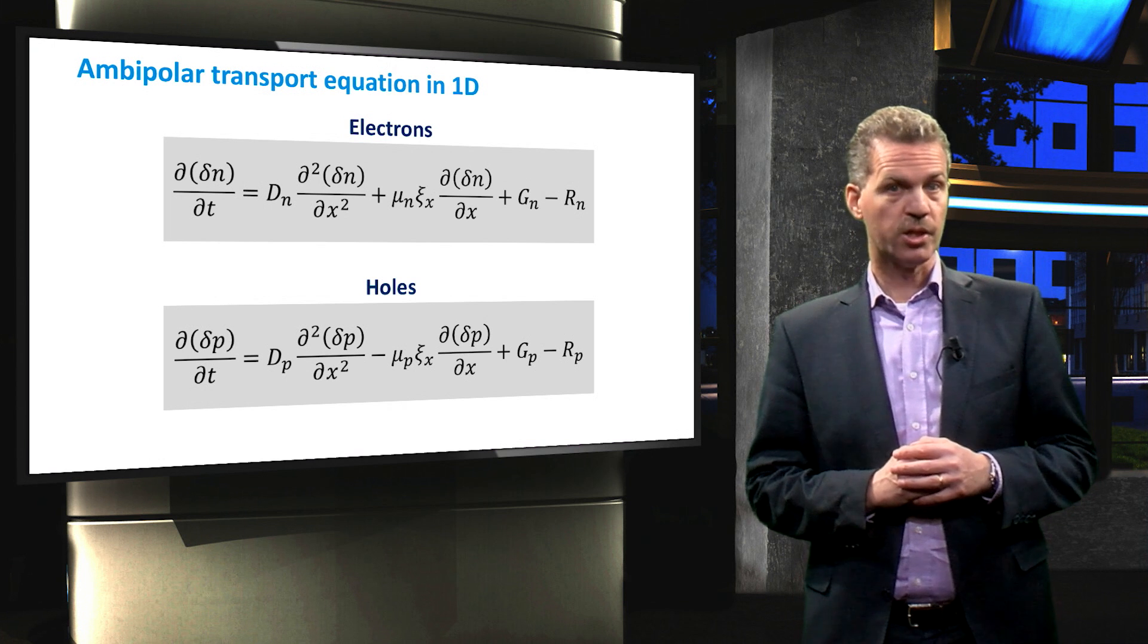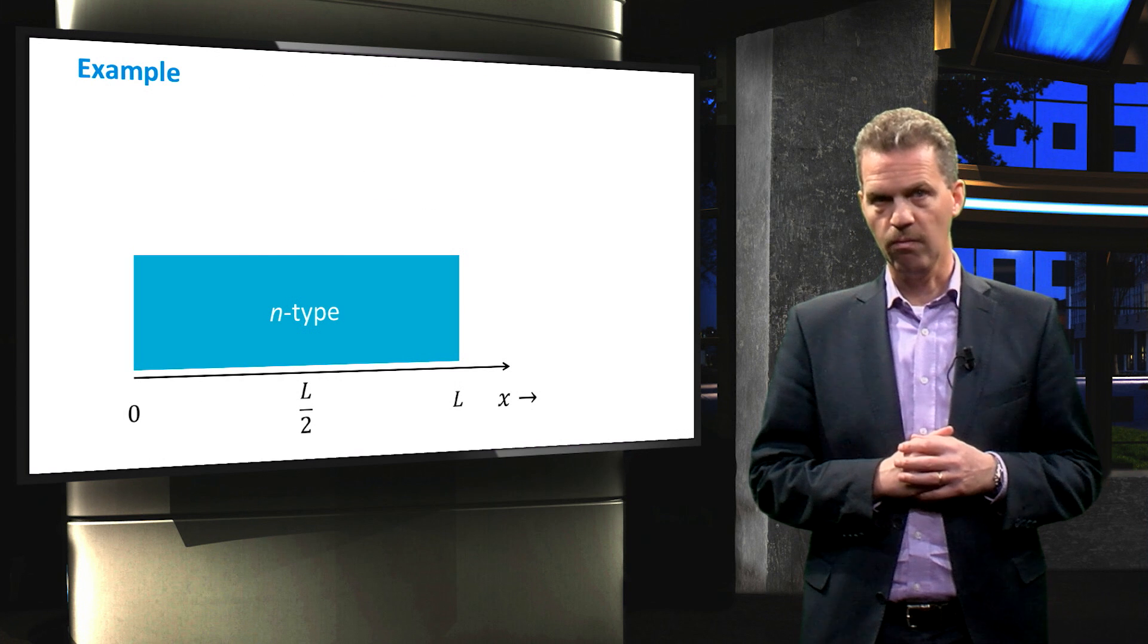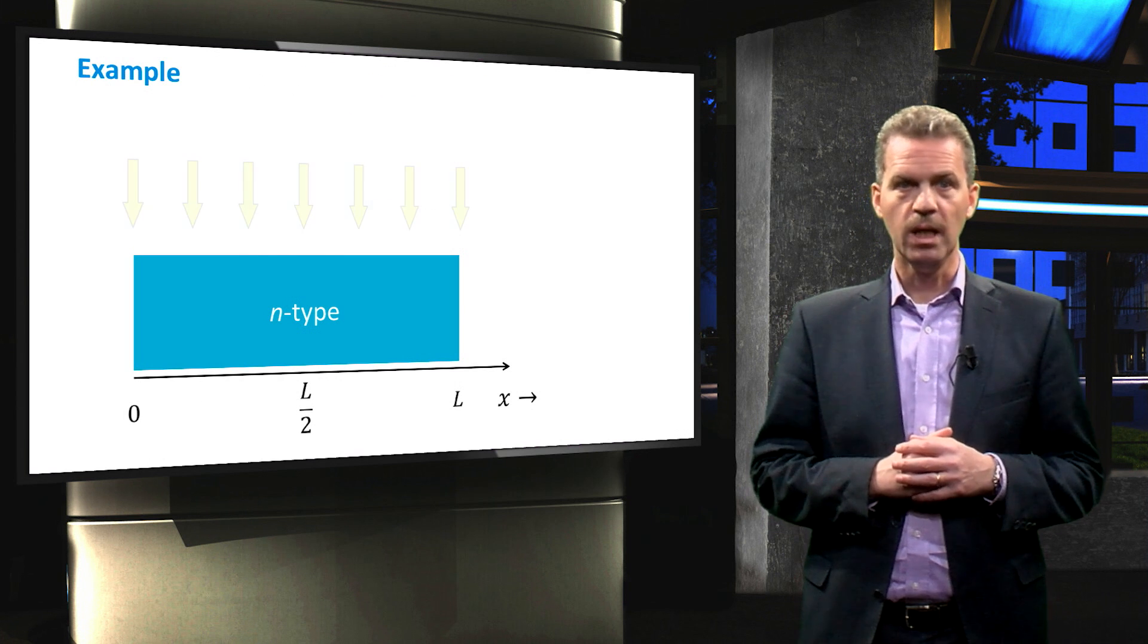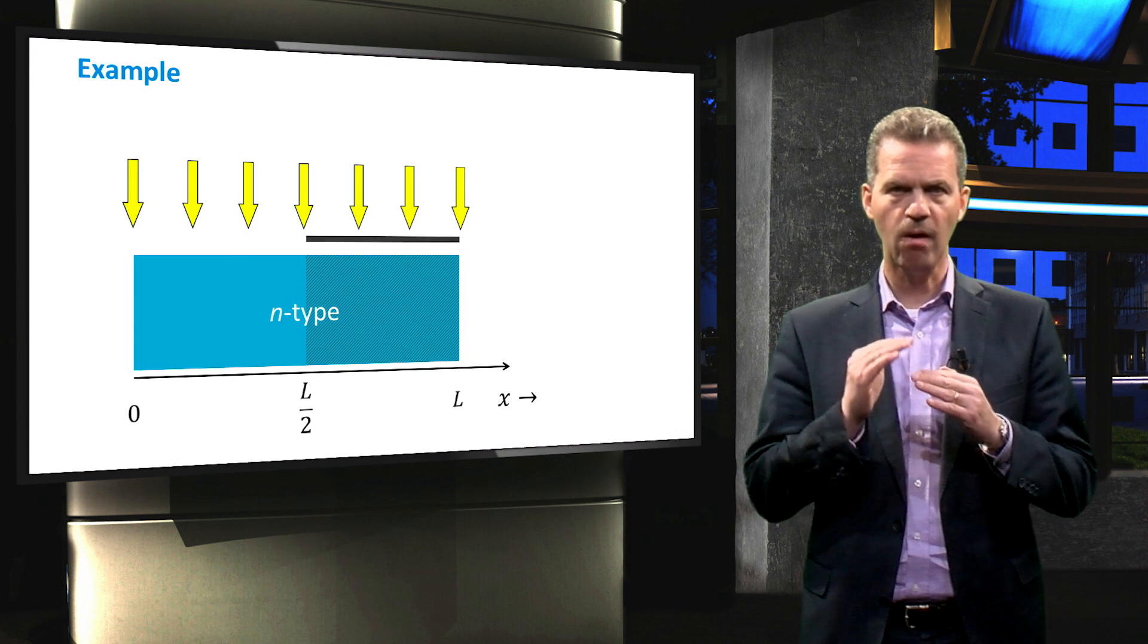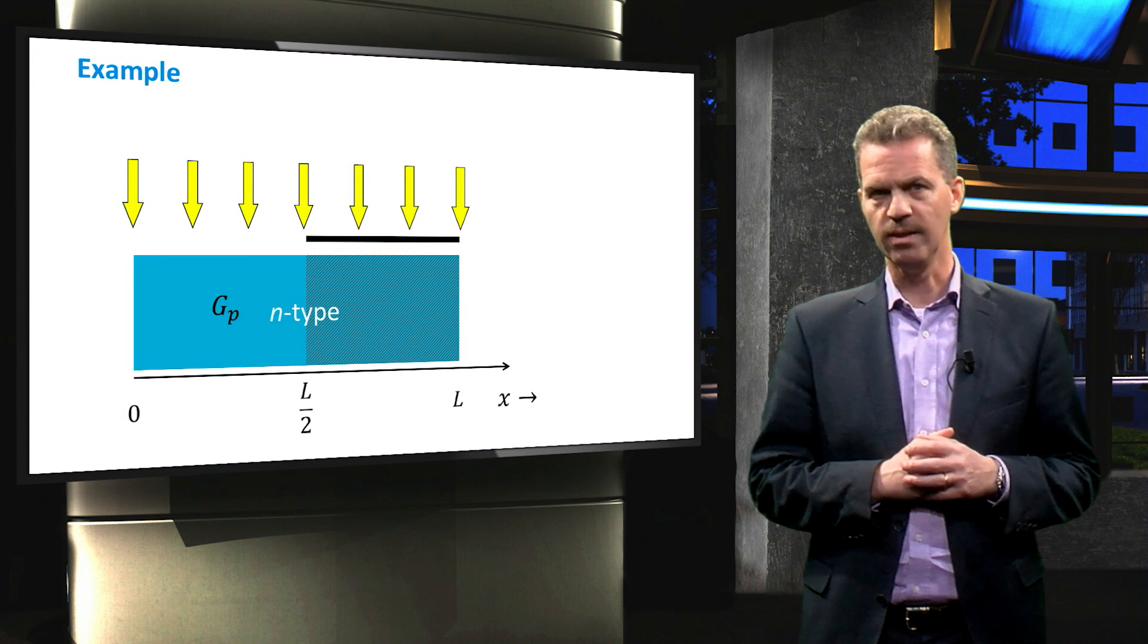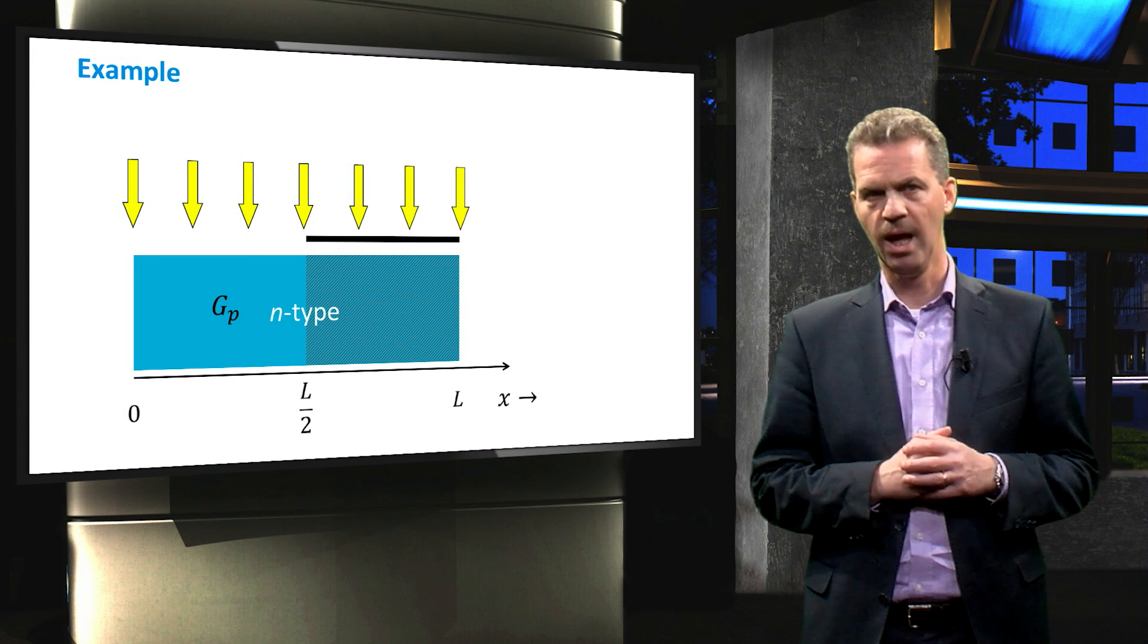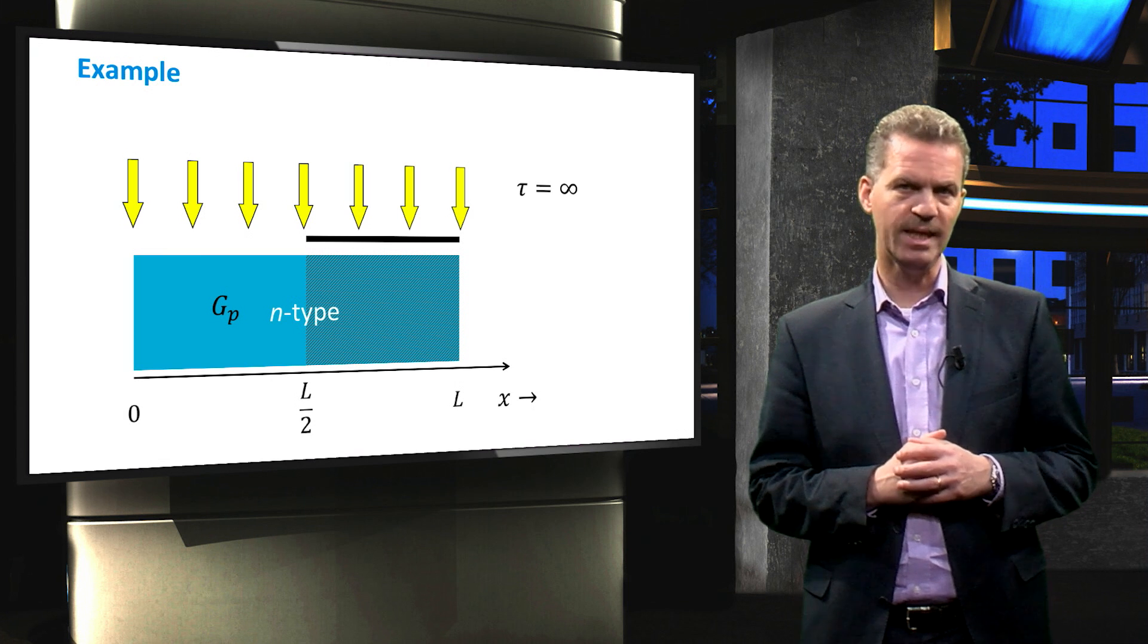We will now look at an example. Imagine a slab of n-type material of length L. We illuminate the material with a uniform illumination, but shade half of it. This results in a uniform generation in the left-hand half of the material, and no generation in the right-hand half.